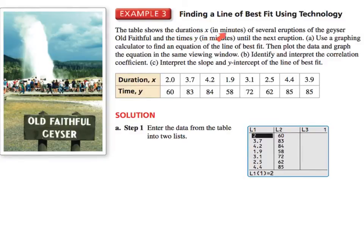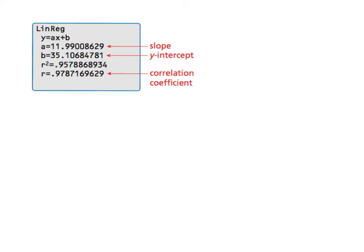So here we go. The table shows the durations x in minutes of several eruptions of a geyser, Old Faithful, and times y in minutes until the next eruption. Use a graphing calculator to find an equation of a line of best fit. Then plot the data and graph the equation in the same viewing window. Identify and interpret the correlation coefficient and interpret the slope and y-intercept of the line of best fit. Now you'll remember, you take your x values and you put them in a list in the first column. You take your y values, you enter them in the second column under the second list. And then you plug it into your calculator, use the linear regression model, and you get this. And where it shows you the slope, the y-intercept, and then the correlation coefficient. So if we wrote something here, we would write the equation. y equals, it's approximately 12, so 12x plus about 35, or you could do 35.1.